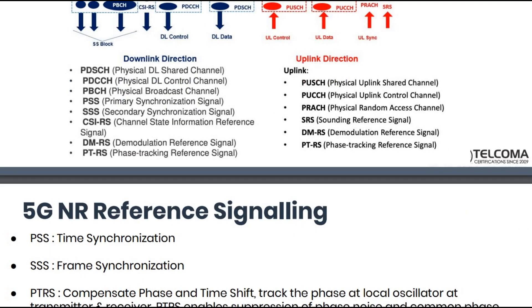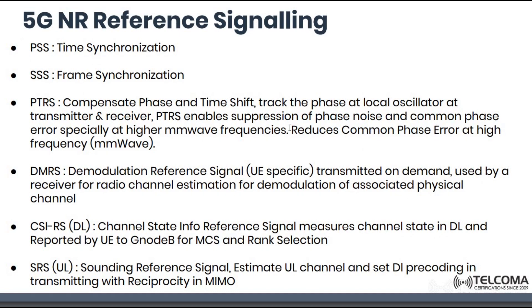Moving on to 5G NR signaling: 5G NR reference signals include PSS and SSS to calculate PCI, as in the normal LTE procedure, for time synchronization and frame synchronization. PTRS is for compensation of phase and time shift — it tracks the phase at the local oscillator at the transmitter and receiver. PTRS enables suppression of phase noise and common phase error, especially at higher millimeter wave frequencies.